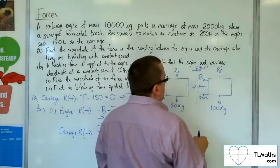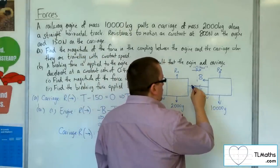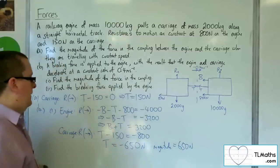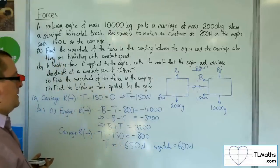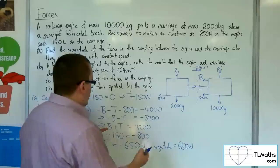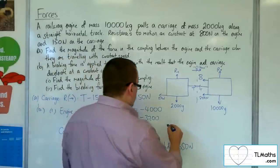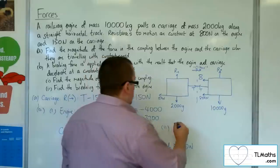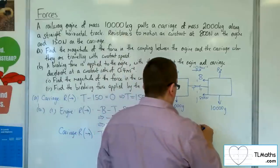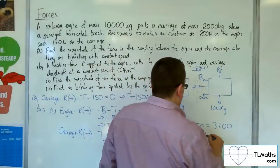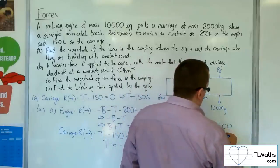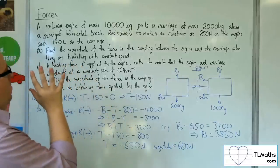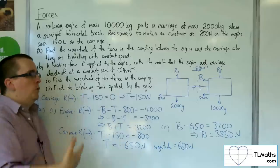The actual picture is that the tension is now acting as a thrust in the opposite direction. Now that we have T as minus 650, we substitute back into B plus T equals 3,200. So B minus 650 equals 3,200, and therefore B equals 3,850 newtons. That is the braking force applied by the railway engine.